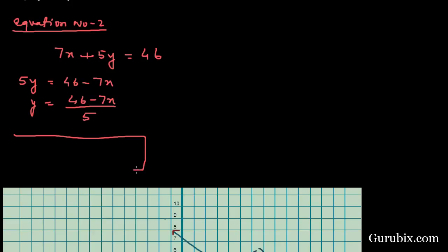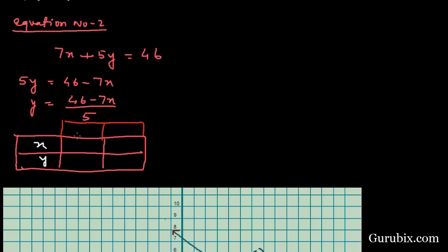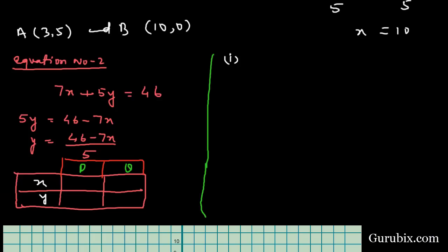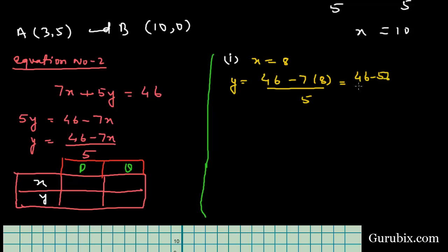We draw a table with two rows and three columns for x and y values, denoting the two points as P and Q. We put x = 8 first. Then y = (46 − 7×8) / 5 = (46 − 56) / 5 = −10 / 5 = −2. So when x = 8, y = −2.